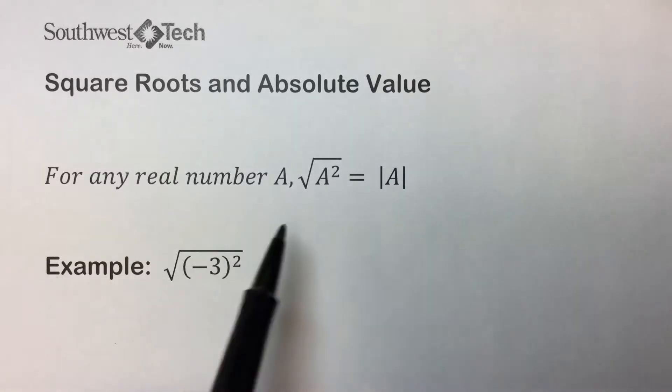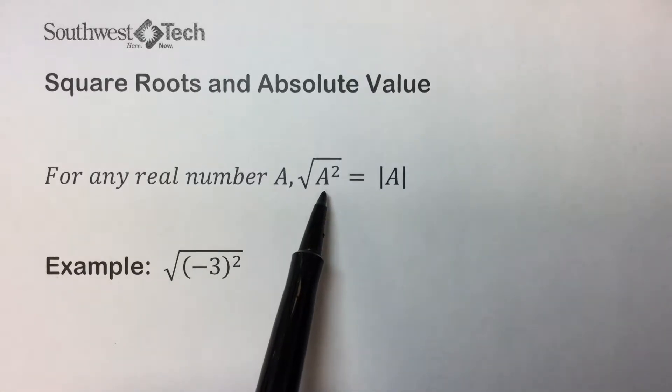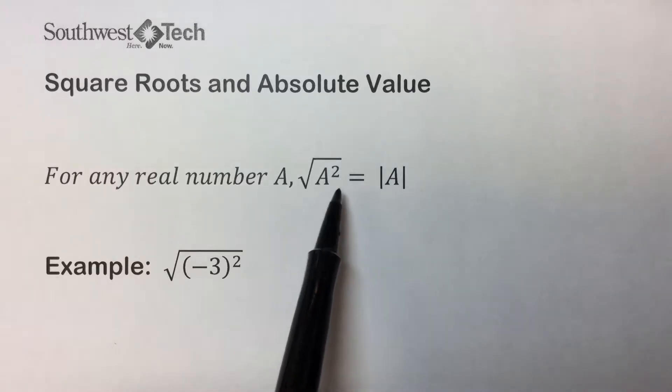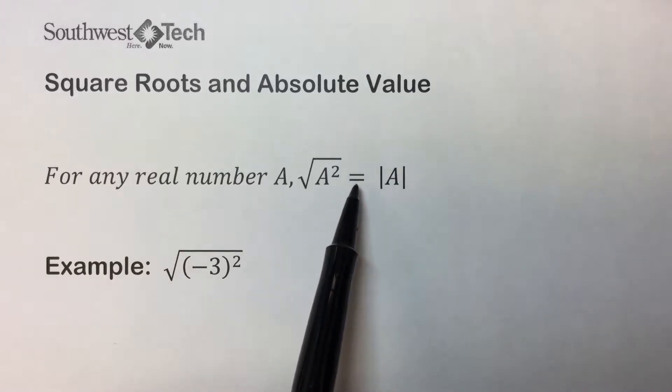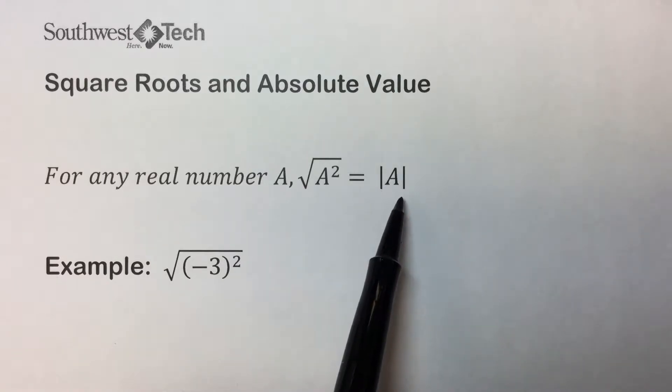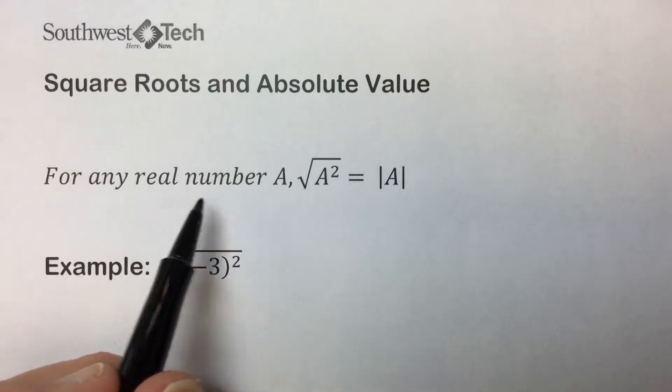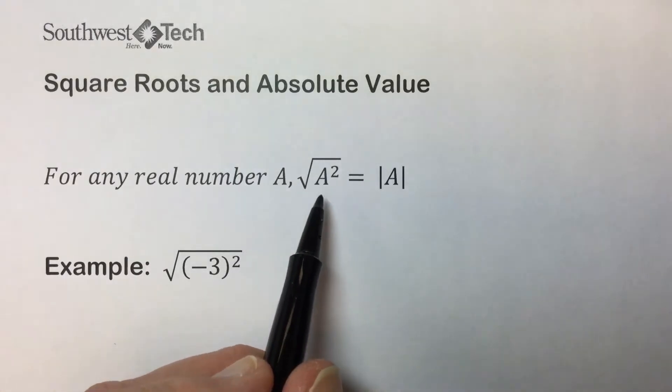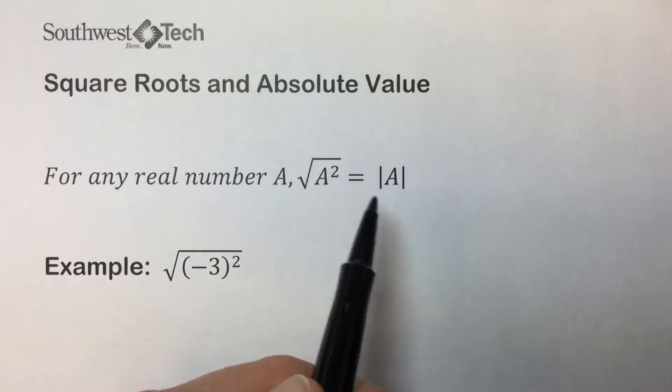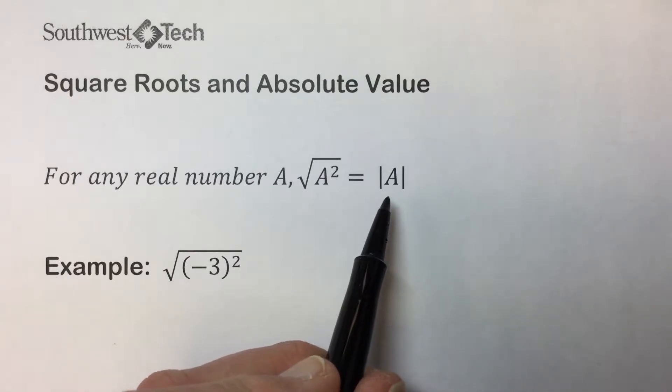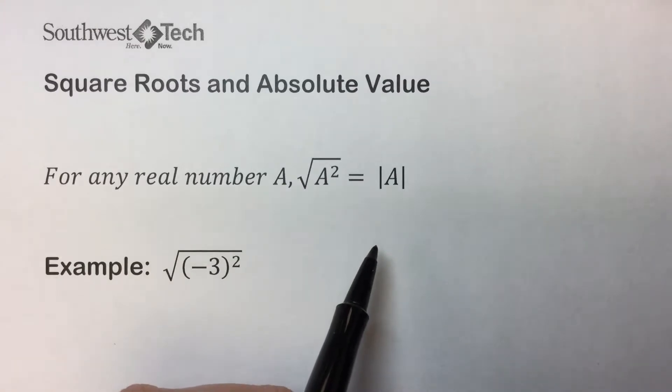If we square a number and then take the square root, it's the same as taking the absolute value of the number. This property states here, for any real number a, the square root of a squared is equal to the absolute value of a. The principal square root of the square of a is the absolute value of a.